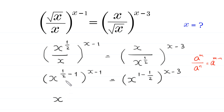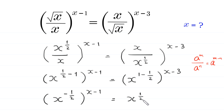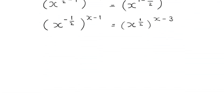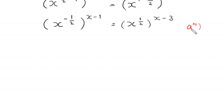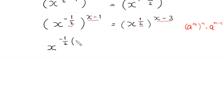By using the power rule a to the power m over a to the power n equals a to the power m minus n, the left side becomes x to the power 1 over 2 minus 1, which is negative 1 over 2, whole to the power x minus 1. The right side becomes x to the power 1 minus 1 over 2, which is 1 over 2, whole to the power x minus 3. Then by the rule a to the power m whole to the power n equals a to the power m times n, we get x to the power negative 1 over 2 times x minus 1 equals x to the power 1 over 2 times x minus 3.